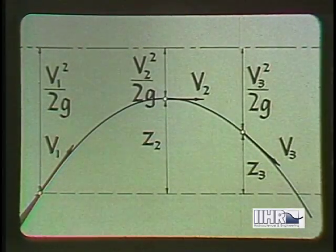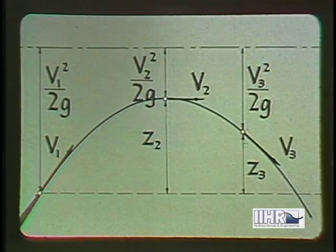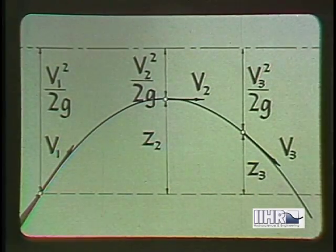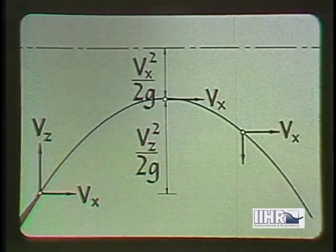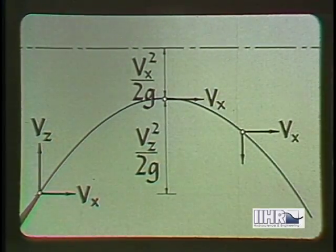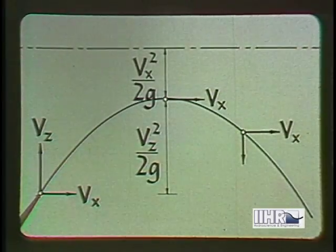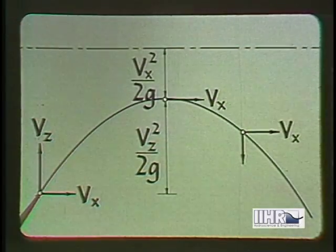In the light of the Bernoulli equation, the sum of the velocity head and the centerline elevation of a liquid jet must be constant. In the light of the equations of physics, the horizontal velocity component must be constant, since there is no horizontal acceleration. And the square of the vertical component alone, hence varies inversely with the elevation.